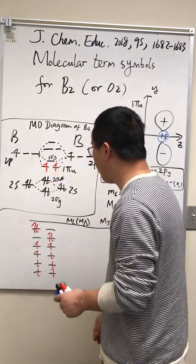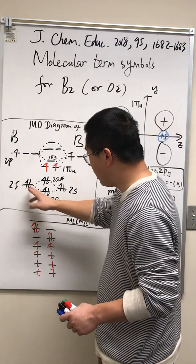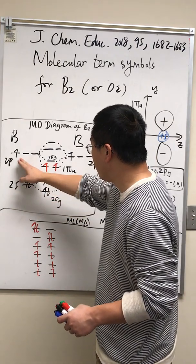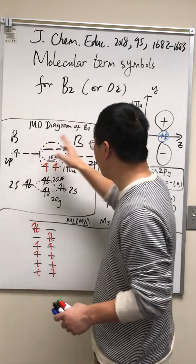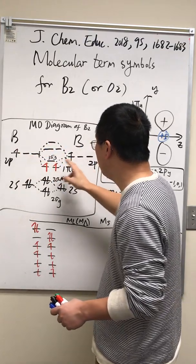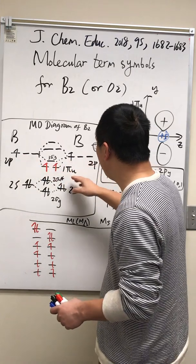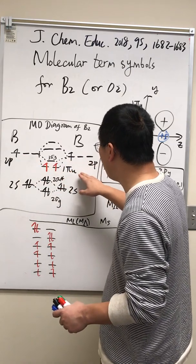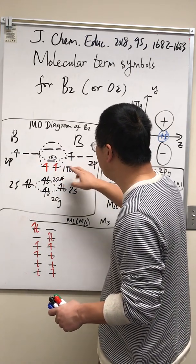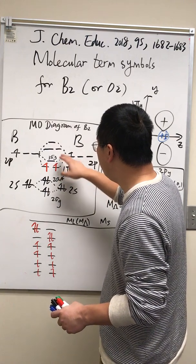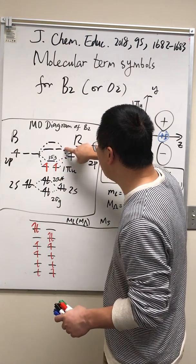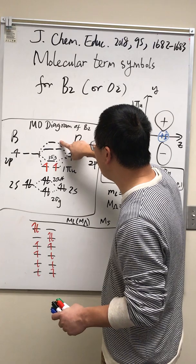A boron has three valence electrons: two S electrons, one P electron. You have two boron atoms, so there are two P electrons. The P orbitals can form two degenerate one Pi U orbitals, three sigma G here, one Pi G star, and three sigma U star.